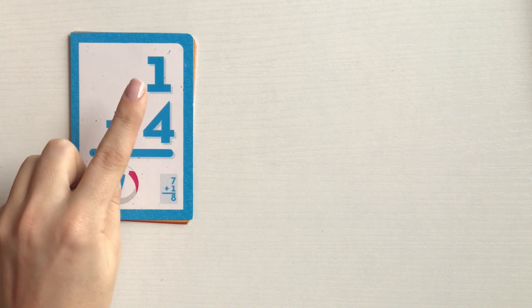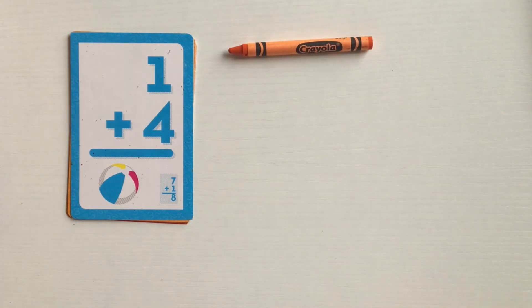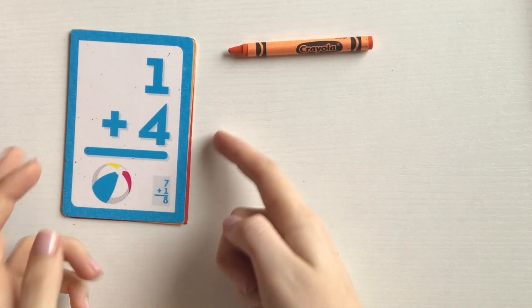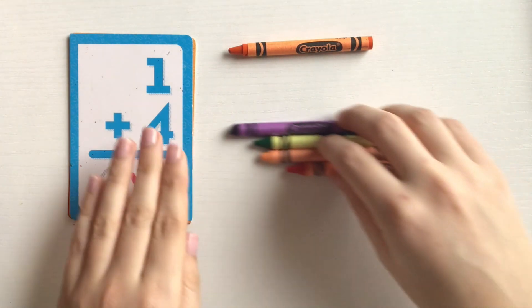typically I would draw one dot, but we can also use manipulatives. So I'm going to put one crayon here. One plus four. Now I'm going to put four crayons over here. Four.